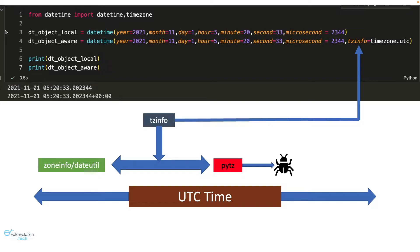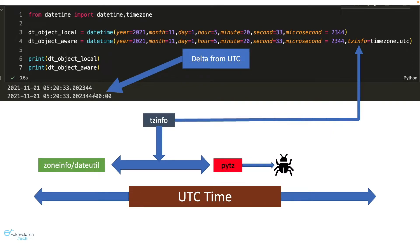If you look at this code, I have created two datetime objects — one is the naive or local datetime object, and one is the timezone-aware datetime object. Whenever we create a timezone-aware datetime object, we provide a timezone information in the tzinfo argument. If you look at the output of the timezone-aware datetime object, we get a time difference from the standard UTC time. That's what timezone-aware objects are — they contain a time difference from UTC.